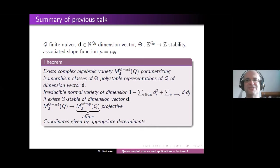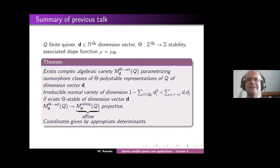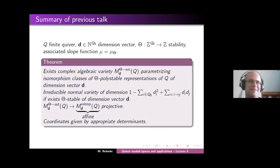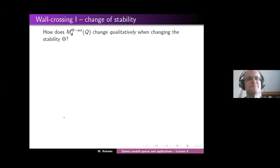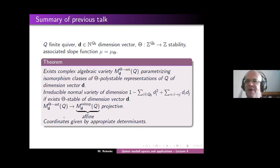As a quick example, even if you consider something like dimension vector (2,3) for the three-arrow Kronecker quiver, it's very difficult to actually coordinatize the moduli space, although the moduli space is a rather well understood six-dimensional variety. So that summarizes what we achieved on Monday.